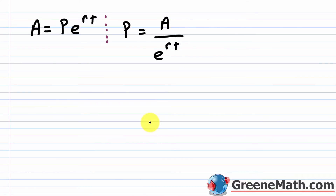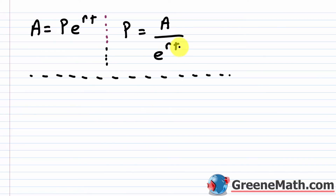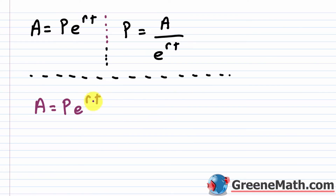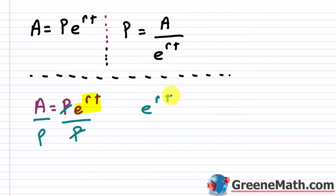The more challenging things to solve for are r, the interest rate as a decimal, or t, the time. When you want to solve for a variable that's in the exponent, you're going to use logarithms. Starting with A equals Pe^(rt), to solve for r, first isolate e^(rt) by dividing both sides by P. That cancels P, giving us: e^(rt) equals A over P.